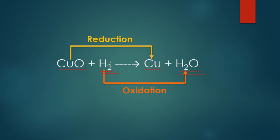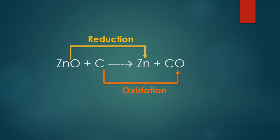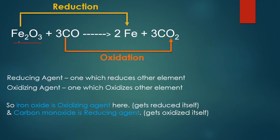Another example: zinc oxide plus carbon gives zinc plus carbon monoxide. Zinc oxide is reduced to zinc, and carbon is oxidized to carbon monoxide. Similarly, iron oxide plus carbon monoxide gives iron and carbon dioxide — iron oxide is reduced to iron, and carbon monoxide is oxidized because it has gained an oxygen.